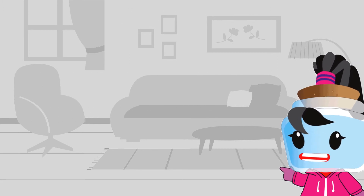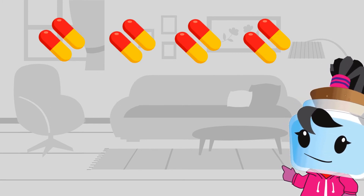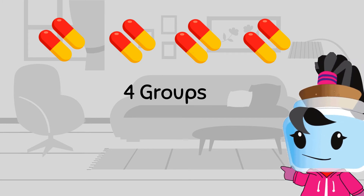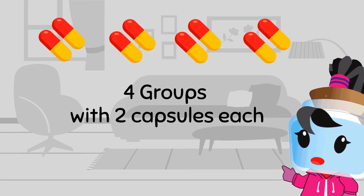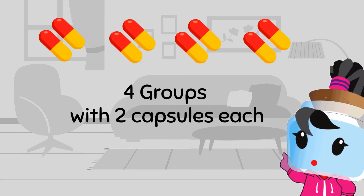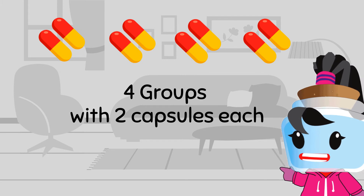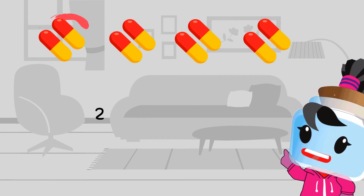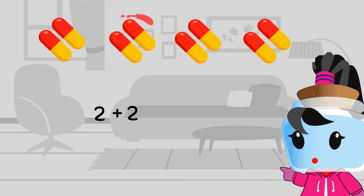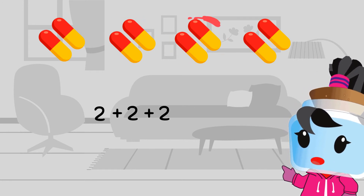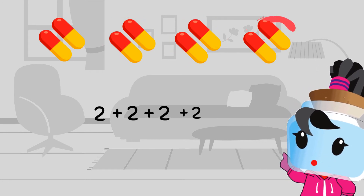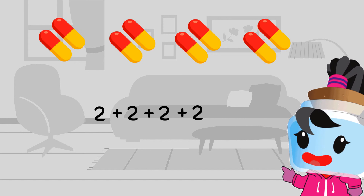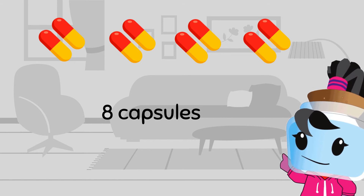Try to look at these capsules. Looks like there are four groups with two capsules each. So we can write this as two plus two plus two plus two, which is equal to eight capsules.